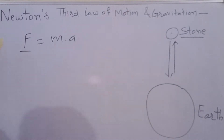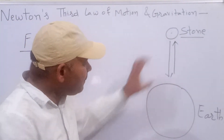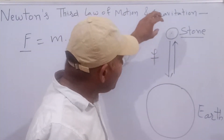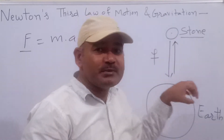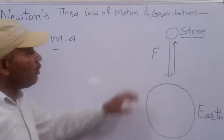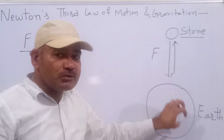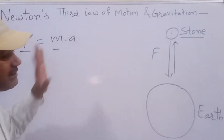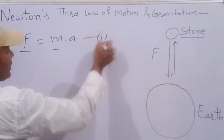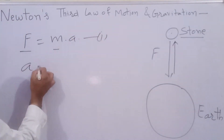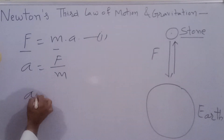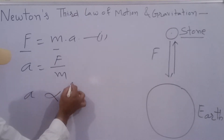यहाँ पे जो F है, ये force है जो इस object के उपर लग रहा है Earth का, और Earth के उपर लग रहा है इस object का। Force is denoted by F. M is the mass of the object and M is also the mass of the Earth. A is the acceleration — rate of change of velocity. From this equation, A is equal to F upon M.